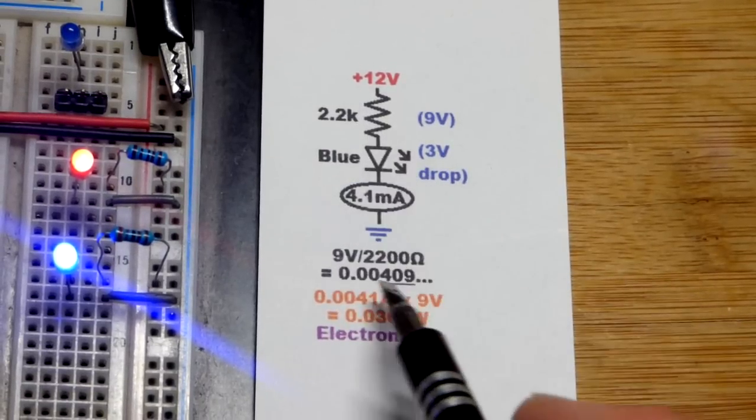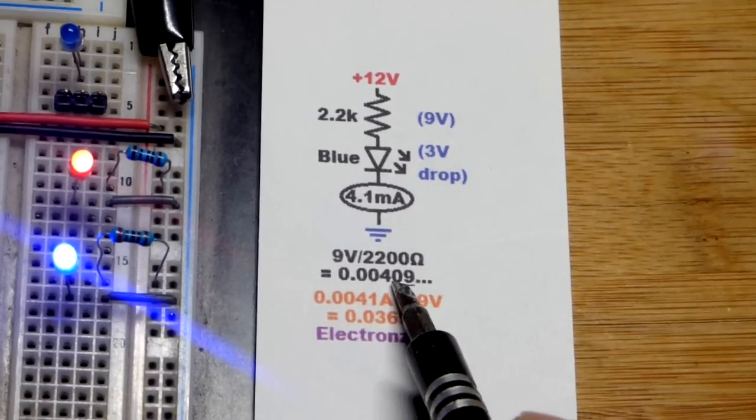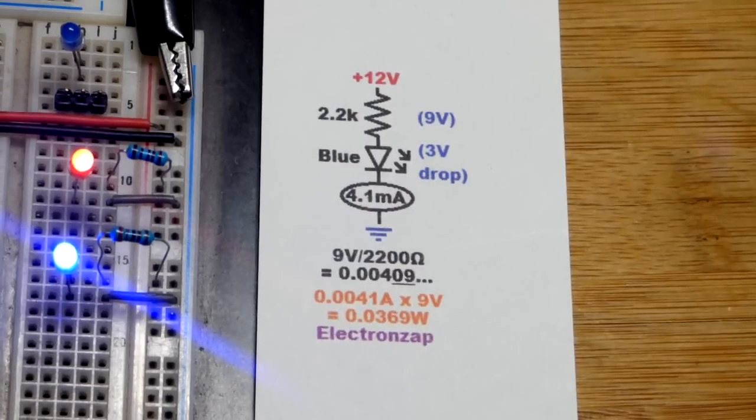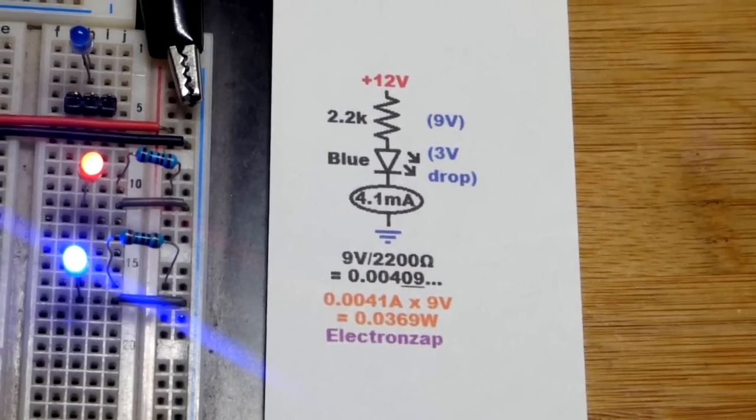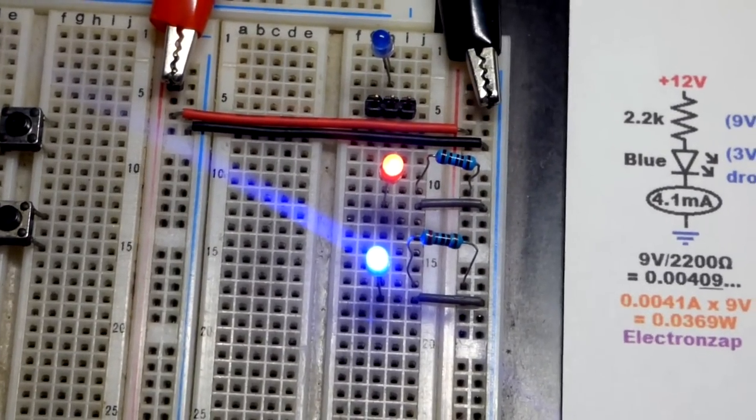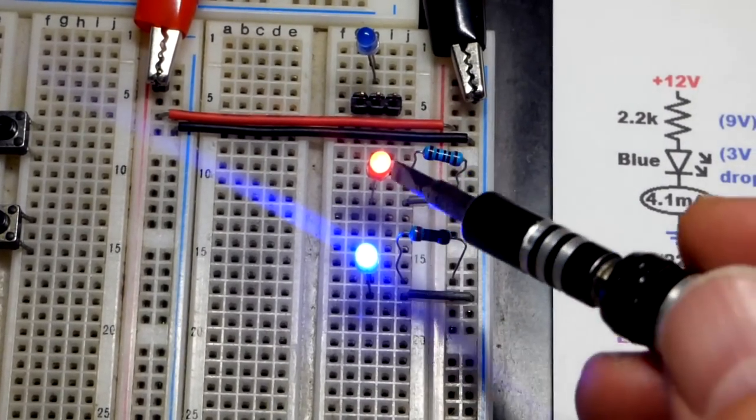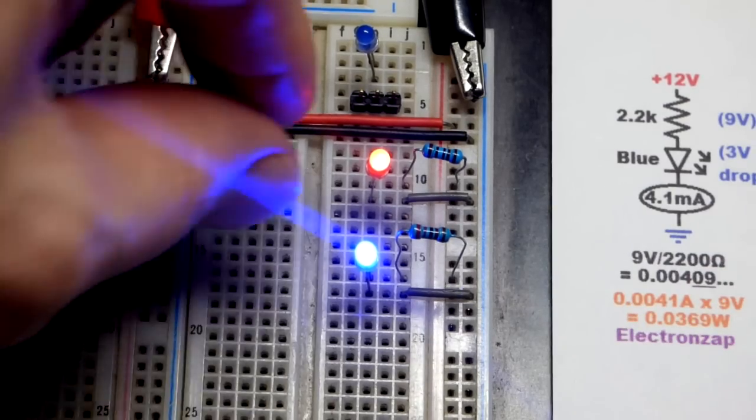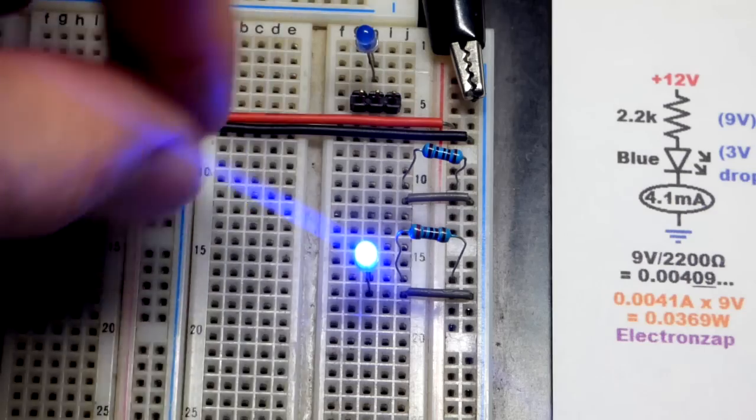We're going to get somewhere about 4.1 milliamps of current flowing, and the resistor's not going to get terribly warm at all. Let's talk about this. There you can see that we actually have more than twice the current flowing through the red LED. Blue LED is really bright right here, even with just about 4 milliamps of current.